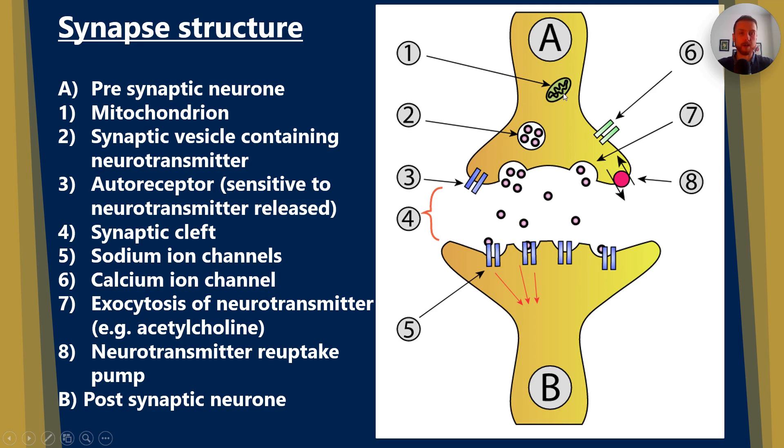Number one is the mitochondrion, which will be the site of aerobic respiration where ATP is generated. Number two, we have our vesicle containing neurotransmitter. Number three, we've got our autoreceptor, but don't worry about that too much as it's not emphasized in your spec.